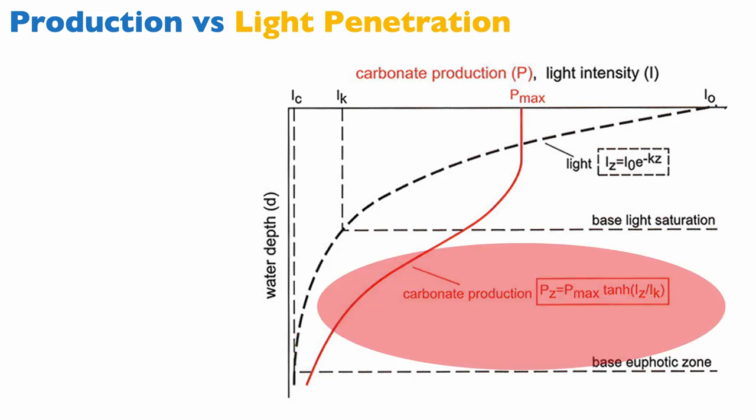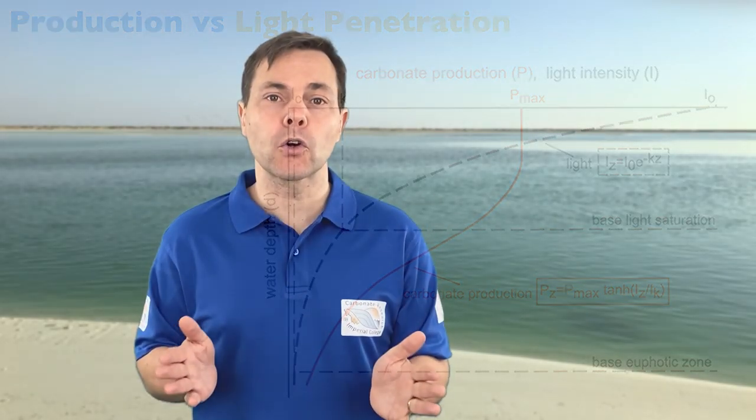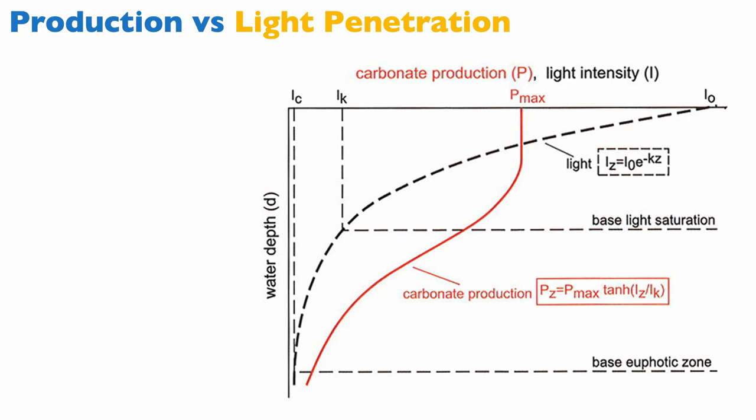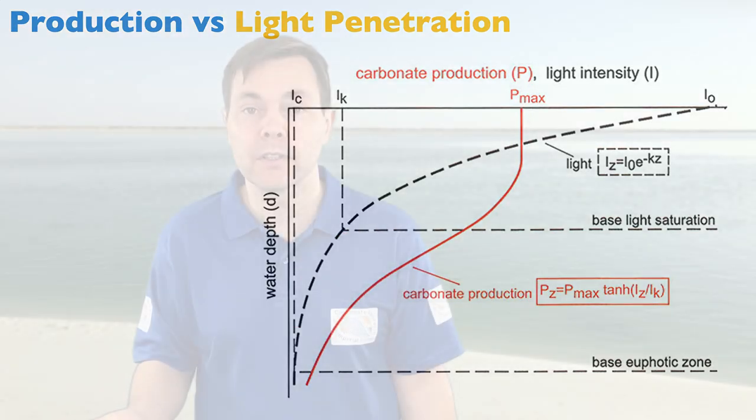Now look at the red curve, the carbonate production curve. It's very clear that carbonate production for autotrophs is maximum in the zone of light saturation where you have lots of light and lots of autotroph production, which is normal because autotrophs need light to grow, they are photosynthetic organisms or have photosynthetic symbionts. As we get towards the base of the light saturation zone, we see a net decrease in carbonate production, and that decrease continues into the euphotic zone until the base of the euphotic zone, at which point we have no production. Light penetration is extremely important for carbonate production.